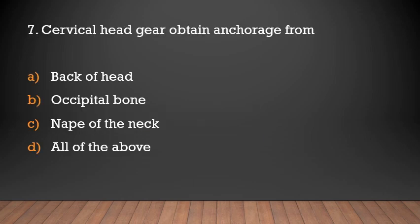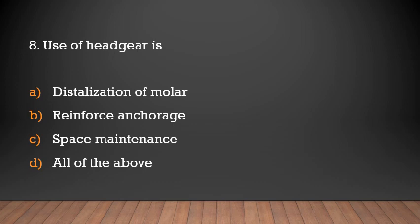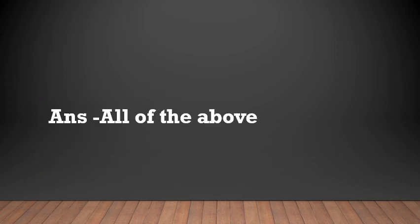Cervical headgear obtains anchorage from: back of head, occipital bone, nape of the neck, or all of the above? Answer: Nape of the neck. Cervical headgear obtains anchorage from the nape of the neck, while occipital headgear obtains anchorage from the back of the head. Uses of headgear include distalization of molars, reinforced anchorage, and space maintenance — all of the above.